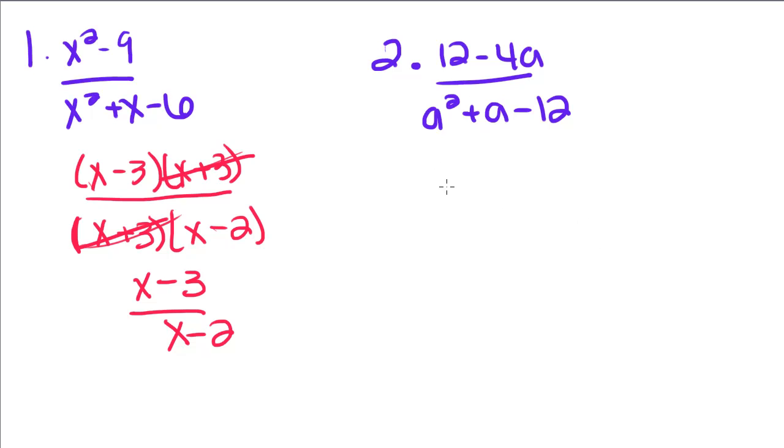Now we're going to factor the top, and the top will just be able to factor a 4 out of it. So it will be 4, 12 divided by 4 is 3, minus 4 divided by 4 is just 1, so a.